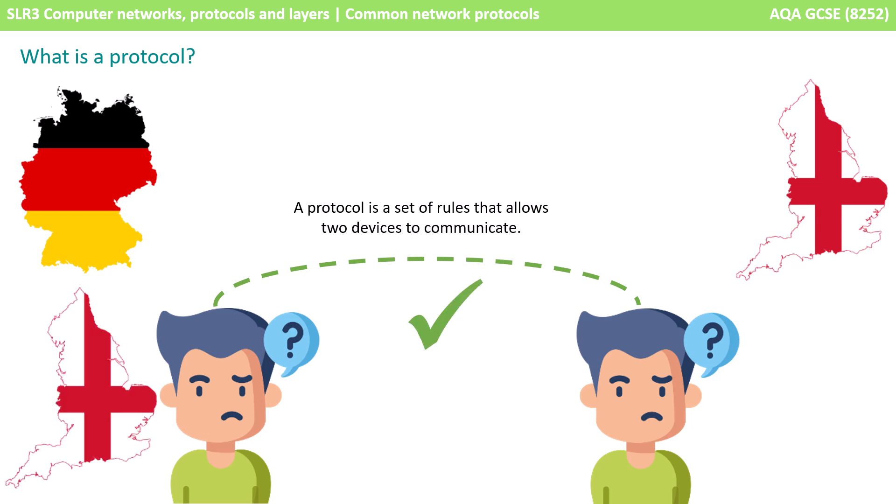However, let's imagine now that the person who spoke German is dual lingual and also speaks English. Because there is a common protocol, both people can now communicate, and that's essentially what a protocol is. It's a set of rules that allows two devices to communicate.